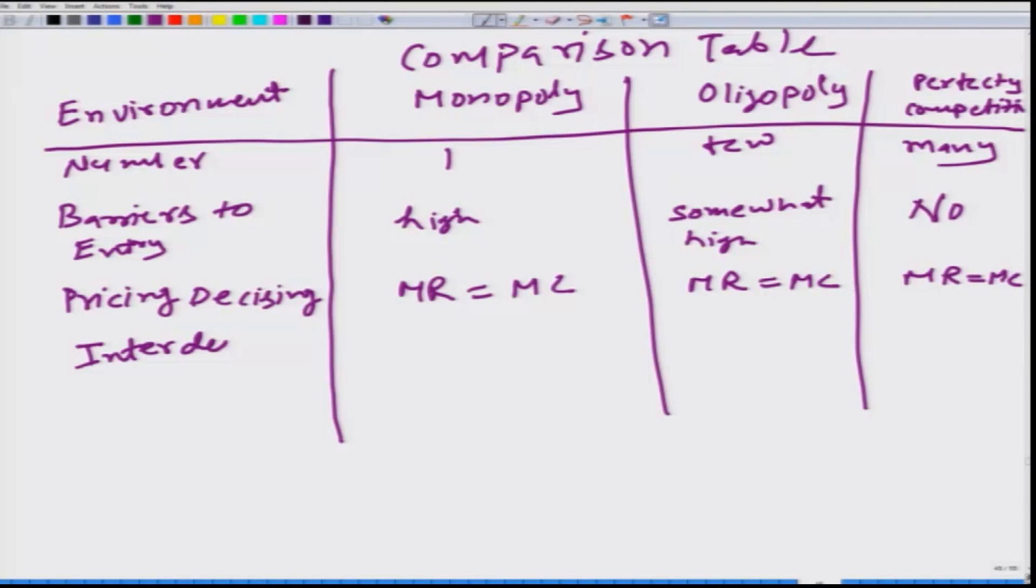Here we will talk about interdependence. We can say no, there is no interdependence because there is no other firm. Here yes, we have interdependence in the case of oligopoly. And then in case of perfectly competitive market, again we do not have any interaction.